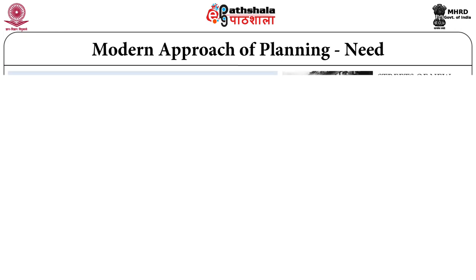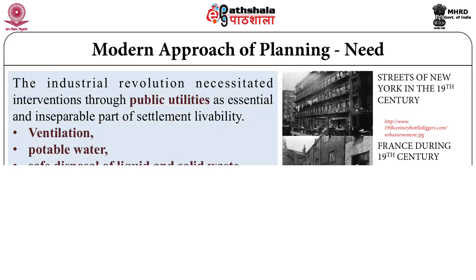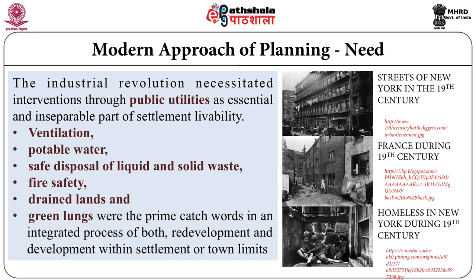Social revolution necessitated interventions through improvement in public utilities — improved ventilation, provision of potable water, safe disposal of liquid and solid waste, fire safety measures, drained lands and green lungs. Pictures of the streets of New York and areas in France show the homelessness and the quality of living in the 19th century.